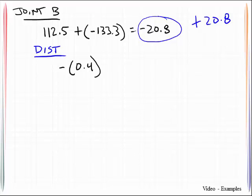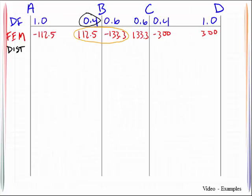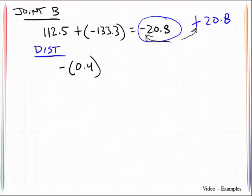So look how this is done. I take the distribution factor. And the negative, by the way, is just to account for the fact that we need to flip signs right here. So that is 0.4. Look where the 0.4 came from. Multiplied by negative 20.8. And that will be 8.32.